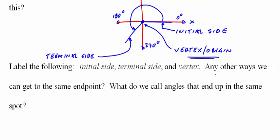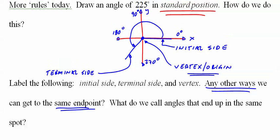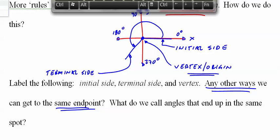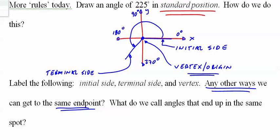Now the question is, are there any other ways we can get to the exact same endpoint? If we start here, how else can we end up here? Well, one of the ways we can do it is by going negative. So we could go negative 135 degrees.